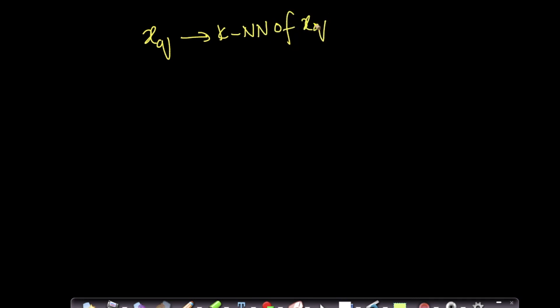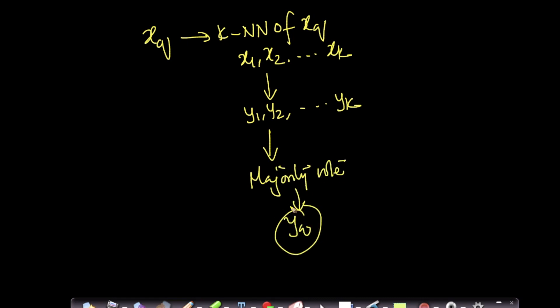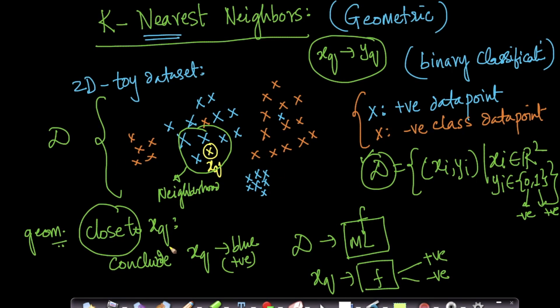To quickly recap: given xq, we take its k nearest neighbors x1, x2, ..., xk, get their corresponding labels y1, y2, ..., yk, and simply do a majority vote to estimate yq. It's mind-bogglingly simple. There are more details we will go over in the rest of the chapter, but the core geometric idea is as elegant as this. Once you can convert machine learning into geometry, it's extremely simple and easy to understand — this is not rocket science.